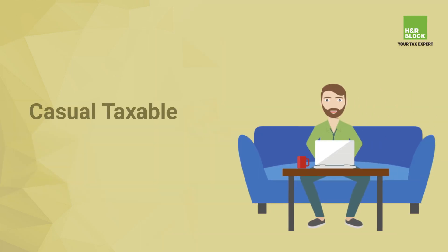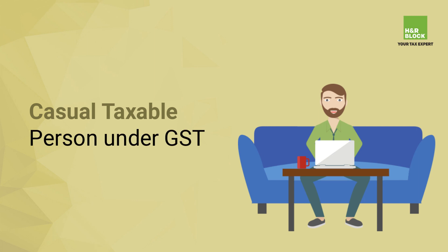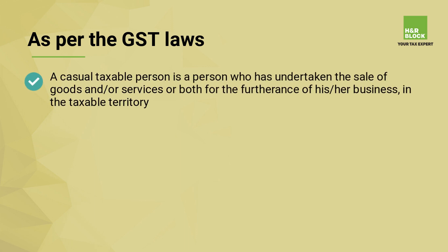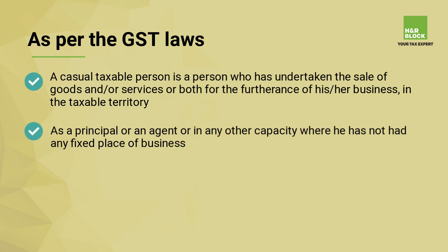Today we will talk about casual taxable persons under GST. As per GST laws, a casual taxable person is a person who has undertaken the sale of goods and/or services, or both, for the furtherance of his or her business in the taxable territory — as a principal, an agent, or in any other capacity — where he has no fixed place of business.